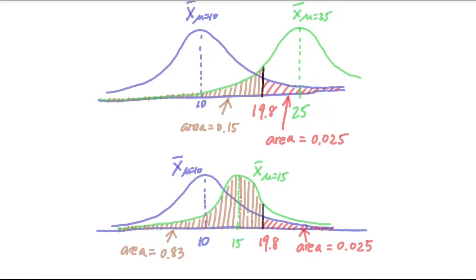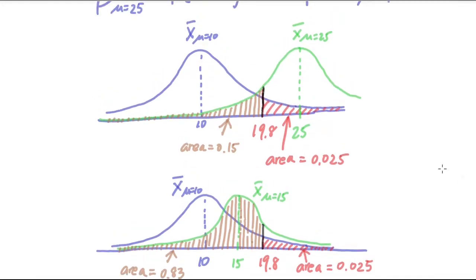If you look at the top picture, the two distributions are sort of farther away from each other. So it's easier to distinguish it. So the beta is relatively small.